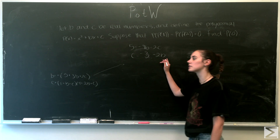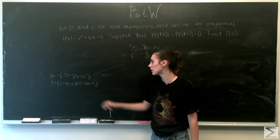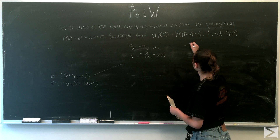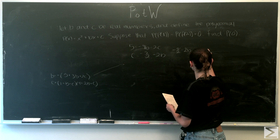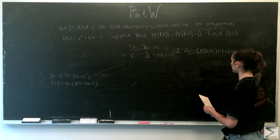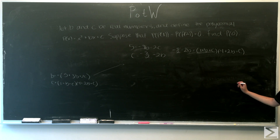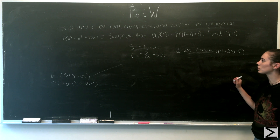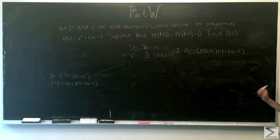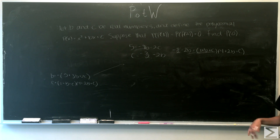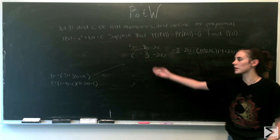We can now substitute c = −5/2 − 2b into the second equation for c. That gives us: −5/2 − 2b = (1 + b + c)(4 + 2b + c). We can then multiply out, rearrange, and solve for b.